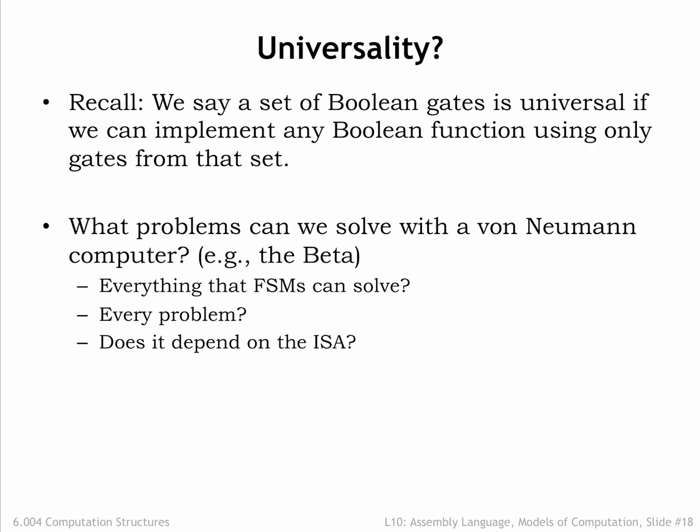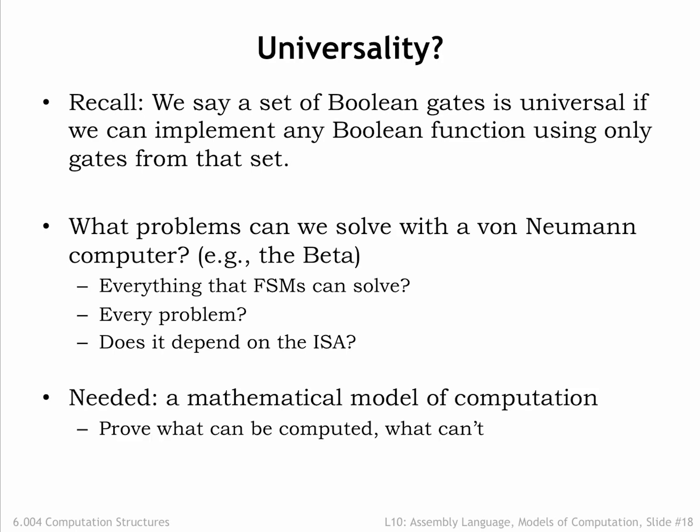What problems can we solve with the von Neumann computer? Can the beta solve any problem FSMs can solve? Are there problems FSMs can't solve? If so, can the beta solve those problems? Do the answers to these questions depend on the particular ISA? To provide some answers, we need a mathematical model of computation. Reasoning about the model, we should be able to prove what can be computed and what can't.